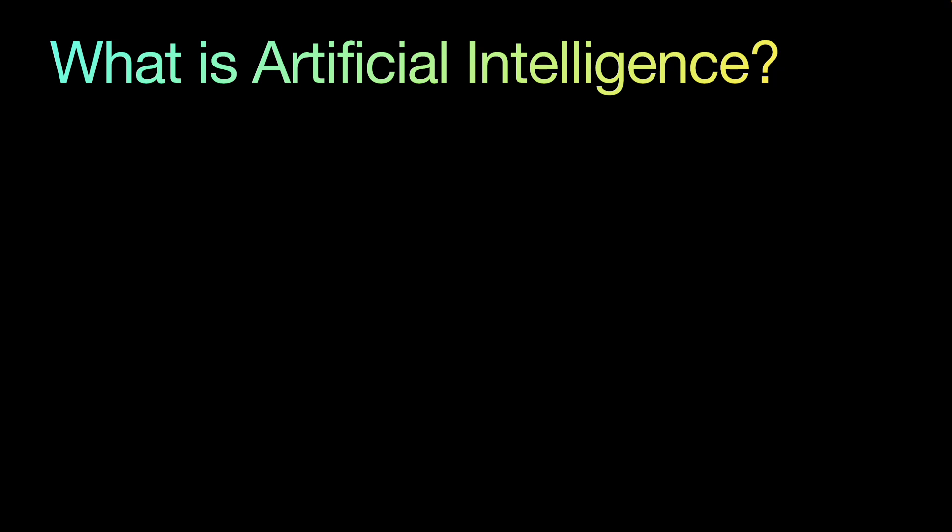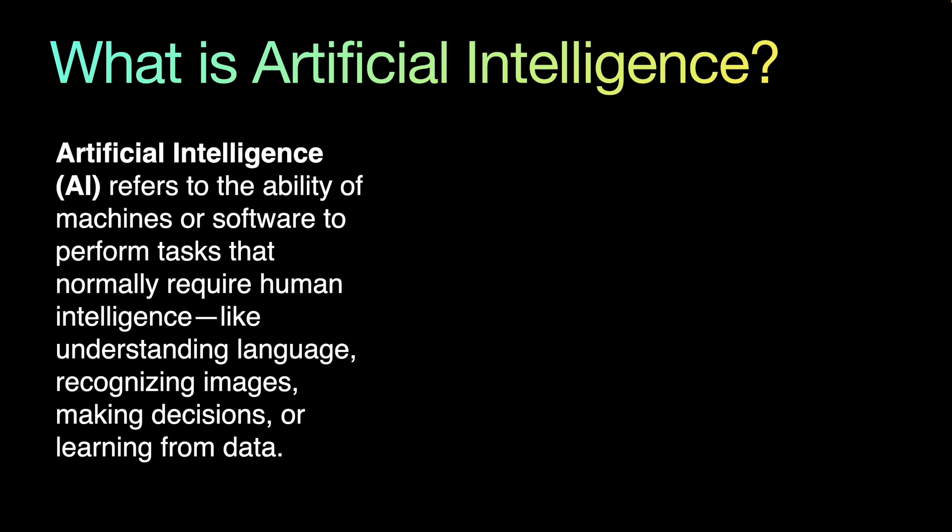Before we dive into how AI systems are built, let's start at the very top: what is artificial intelligence really? Artificial intelligence refers to a broad field of computer science focused on building systems that can perform tasks which typically require human intelligence — things like understanding language, recognizing images, or making decisions.